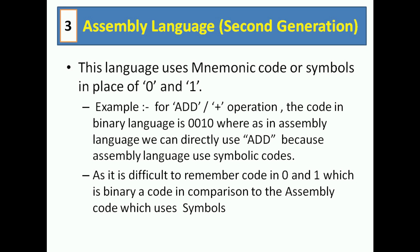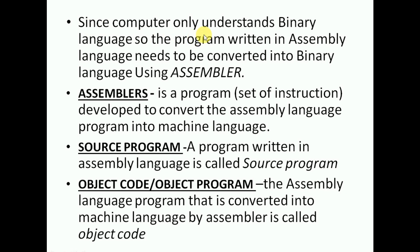Assembly language uses symbolic codes, so it is easy for a human being to write ADD instead of 0010, reducing mistakes. It is also easier to remember symbolic codes than binary codes. Since the computer only understands binary language, a program written in assembly language needs to be converted into binary language.